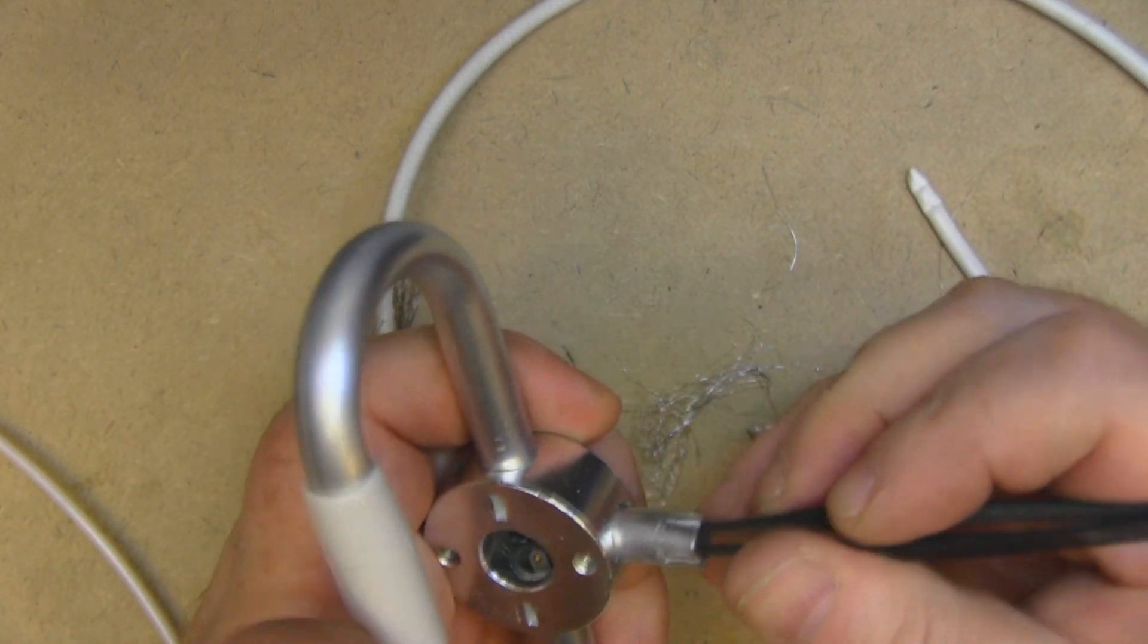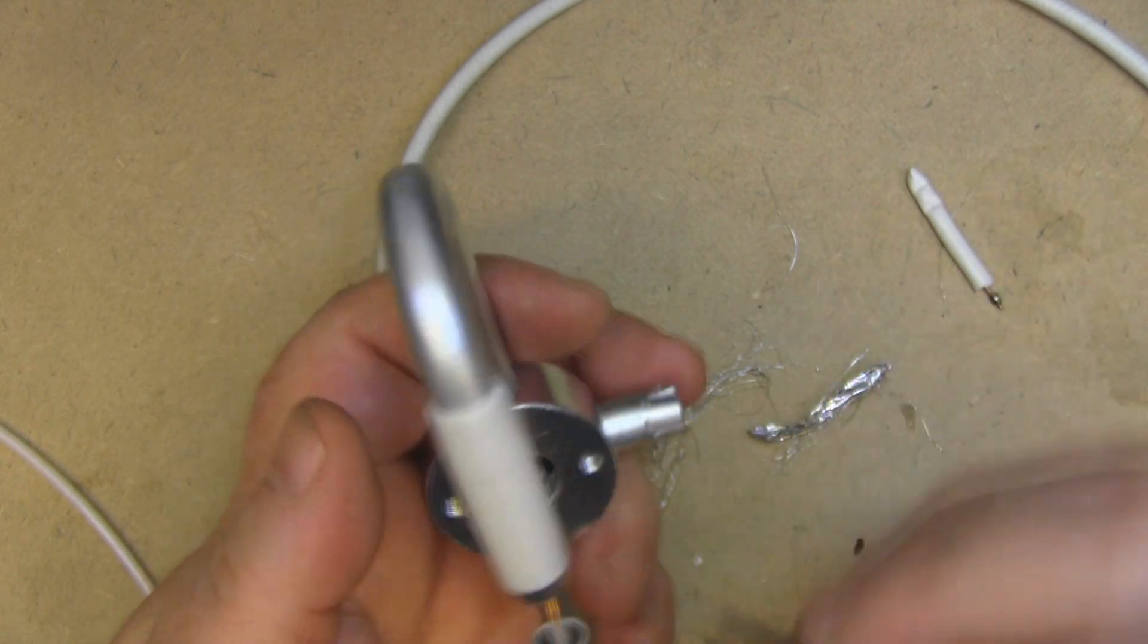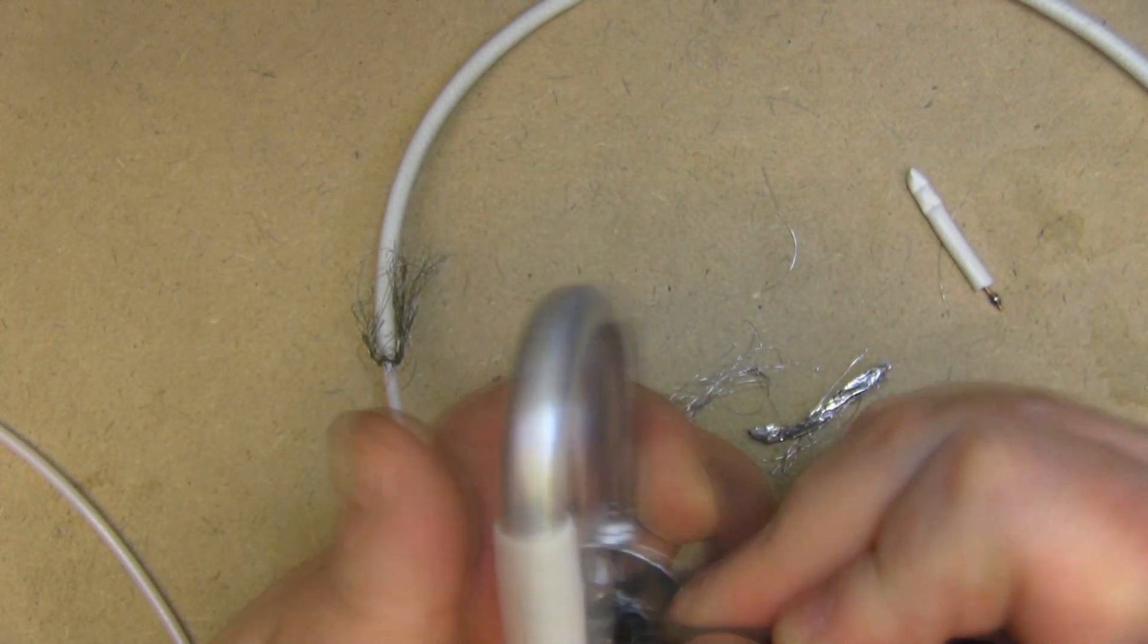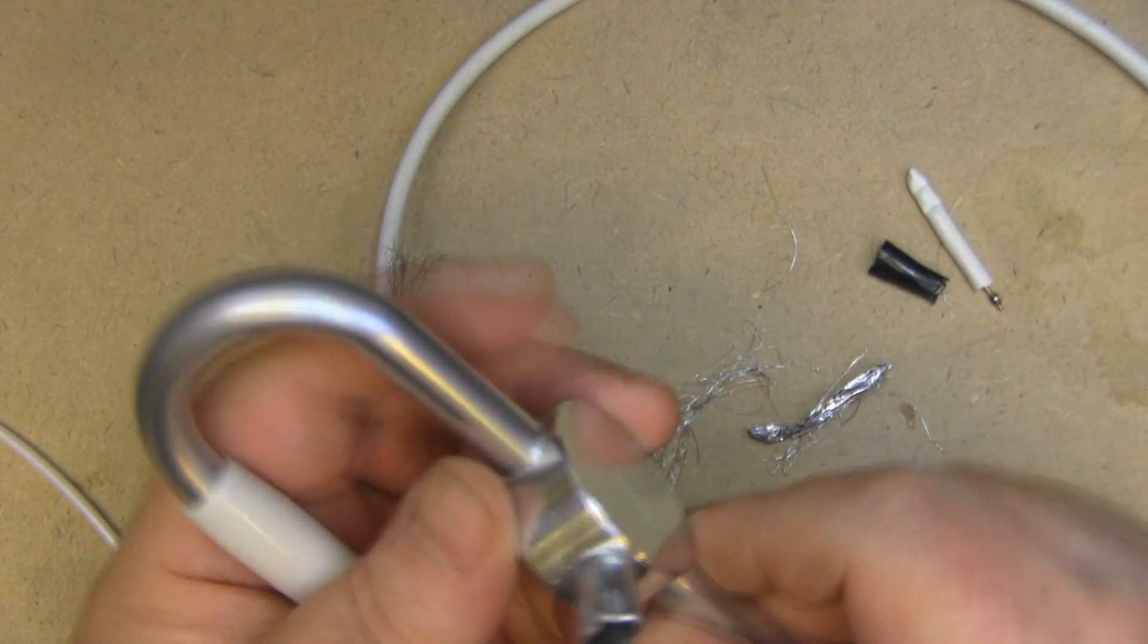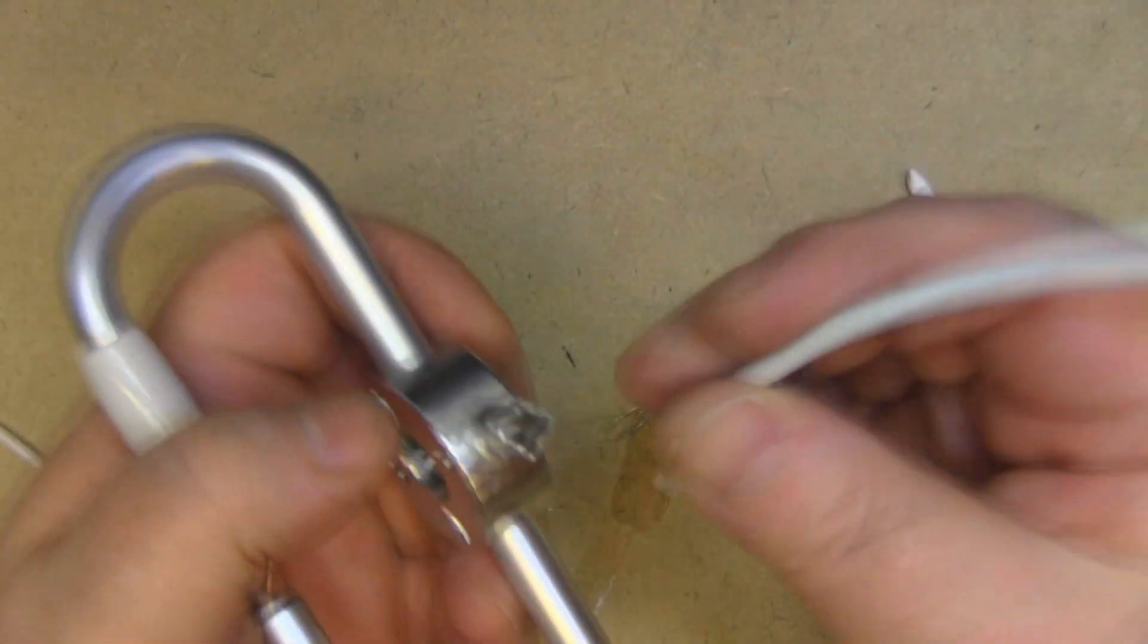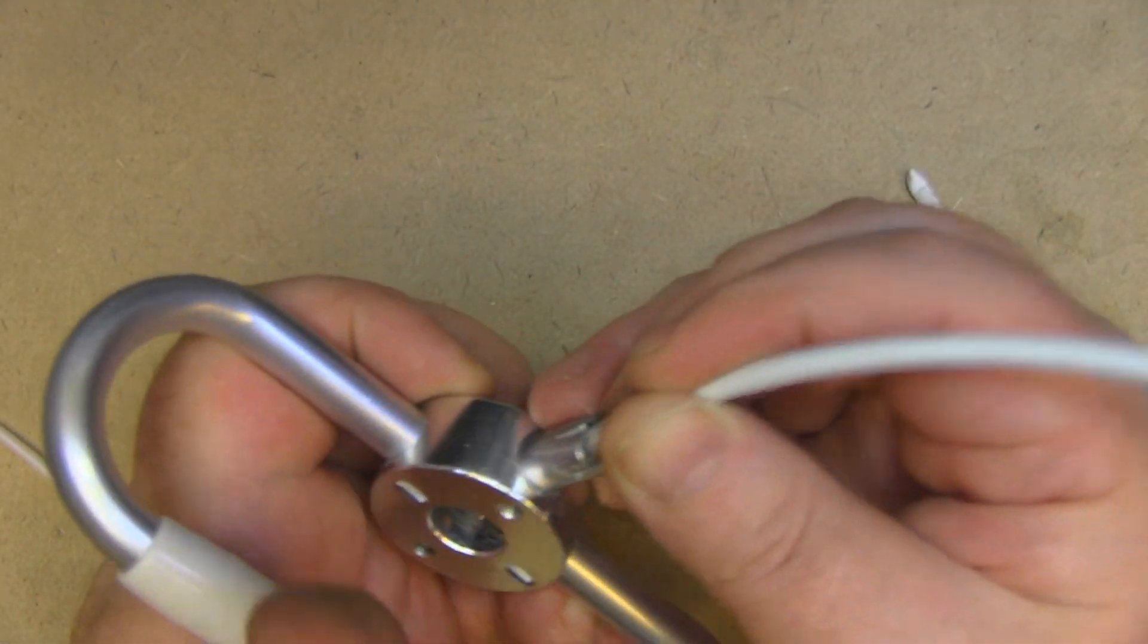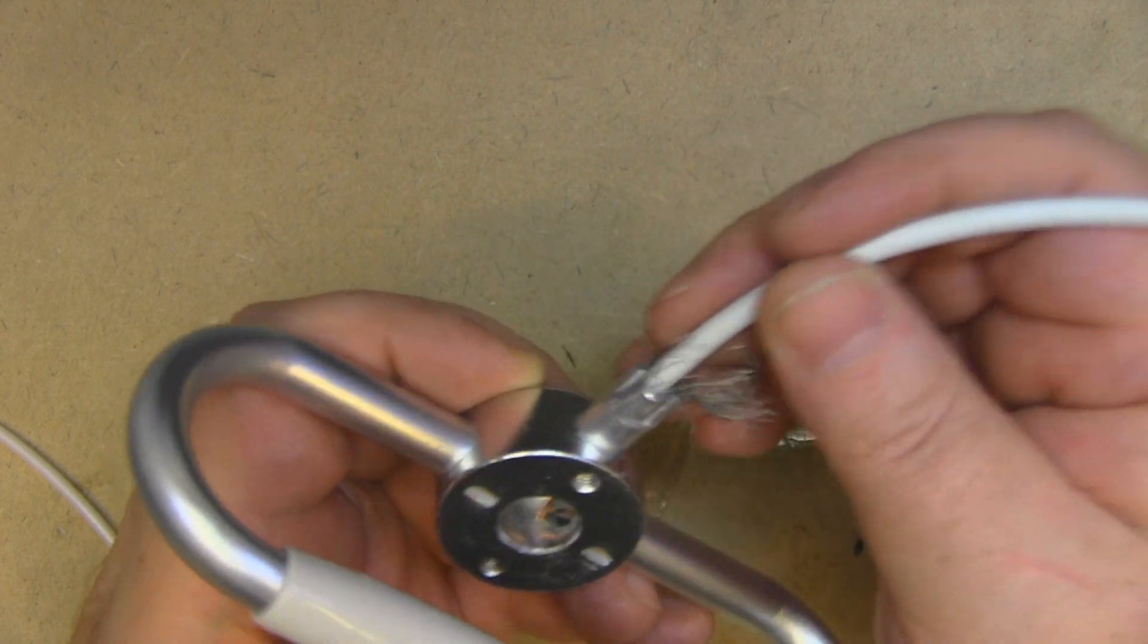It doesn't want to come out this way. Let's see if I can get it out this way. Oh, there we go. So now I should be able to fit this coax through and possibly get a crimp on there.